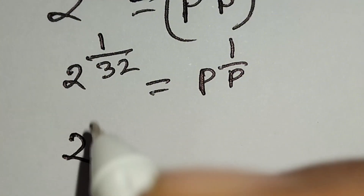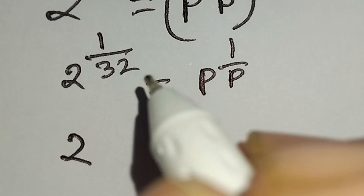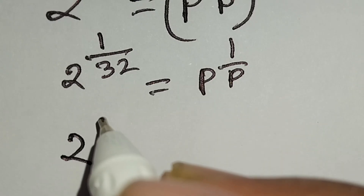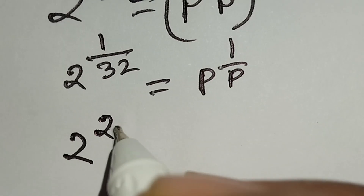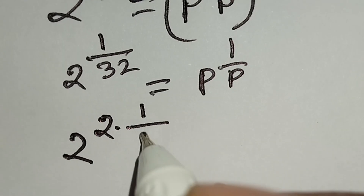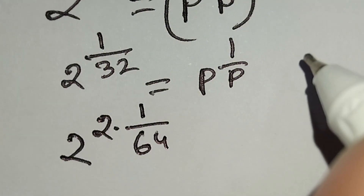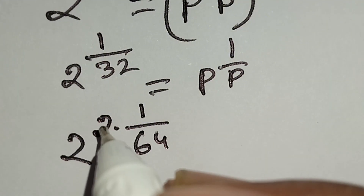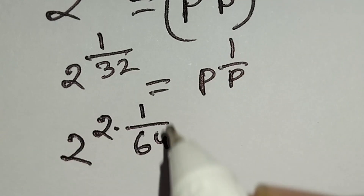Here 2 to the power 1 over 32 — we can write this 1 over 32 as 2 times 1 over 64. Here 2 times 1 over 64 is equal to 1 over 32, so these two are equal.